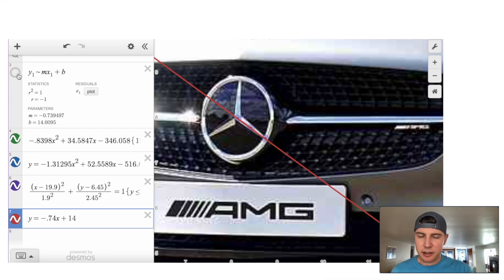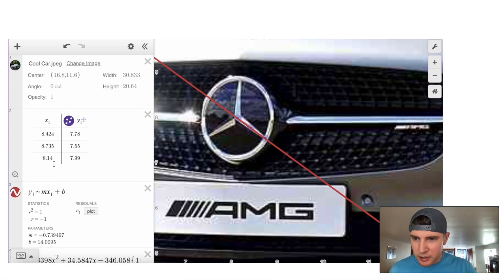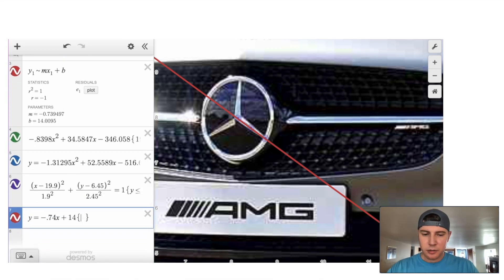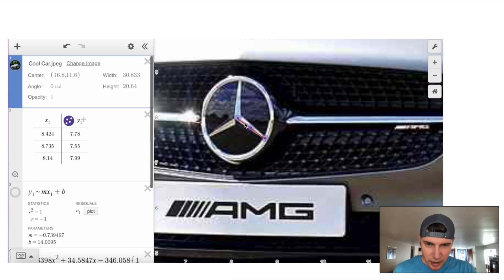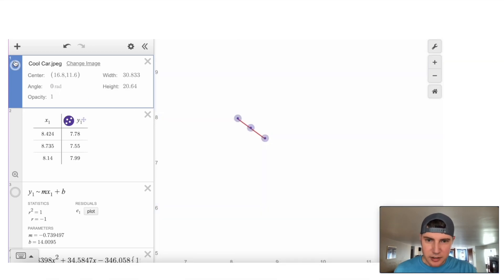And now when we turn this on, you can see that it replaces that line. And same thing, just set the limits. And you can base your limits based on your points again. So our lowest x value point is 8.14, and our largest is 8.74. So 8.14 is less than or equal to x is less than or equal to 8.74. And now you can see that we just did that part of the Mercedes symbol. And that's now a straight line.